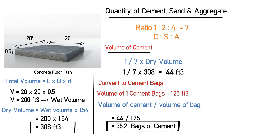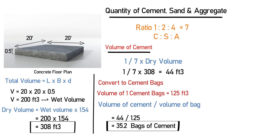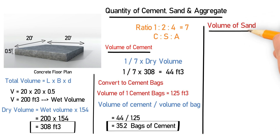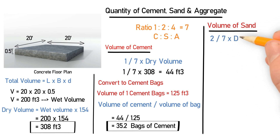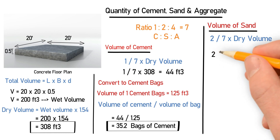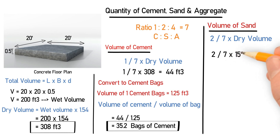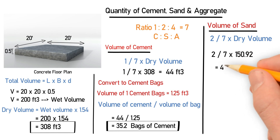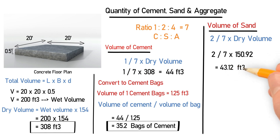After calculating the volume of cement, let's calculate the volume of sand. For sand, the ratio is 2, so the formula is (2 ÷ 7) × dry volume = (2 ÷ 7) × 308 = 88.0 cubic feet. This gives us approximately 88 cubic feet of sand required.